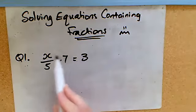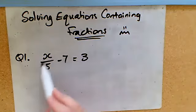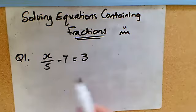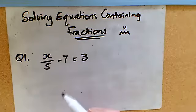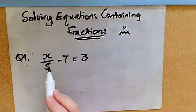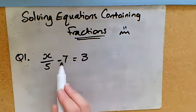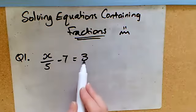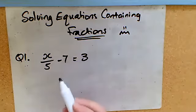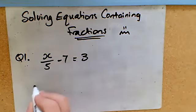I suppose the first thing to work out is what's the first thing that I'm going to do to get x on its own, so let's look at what happened to x. x was divided by 5, then we subtracted 7 and we got our answer of 3. So we can think of this like a function machine. We started with x.